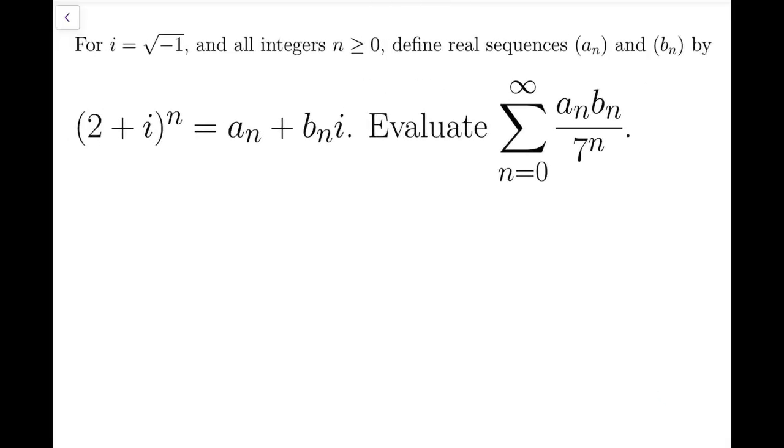When we see the definition of a_n and b_n, it might be tempting to expand (2+i)^n with the binomial theorem, but the expression would be very tedious. Another way is to rewrite this complex number into polar form instead.